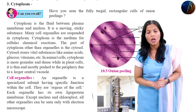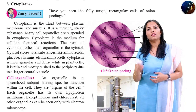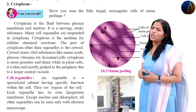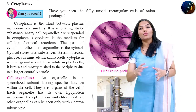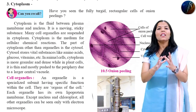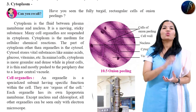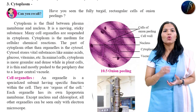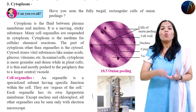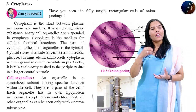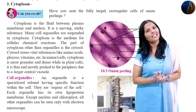Cytoplasm has a ground substance called cytosol. The ground-level substance of cytoplasm is called cytosol. It contains different types of vitamins, minerals, and vital substances like amino acids, glucose, and vitamins. It contains all the nutrients, and all of them are present in the cytosol.